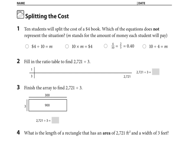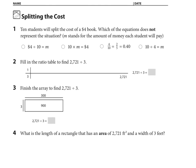You have ten students who are splitting the cost of a four dollar book and we're trying to figure out which equation does not represent this situation. So imagine you and nine friends—ten of you—are buying a four dollar book together. This first equation looks good: it's four dollars, you're splitting it ten ways.